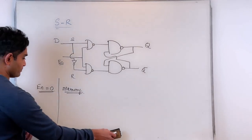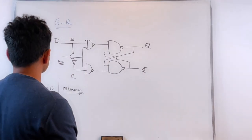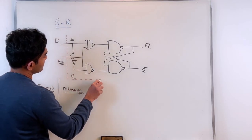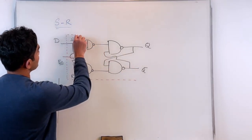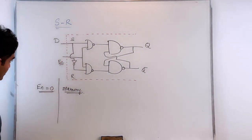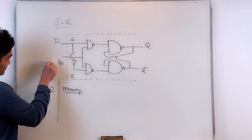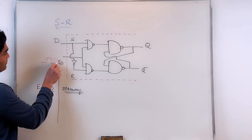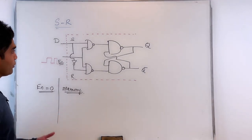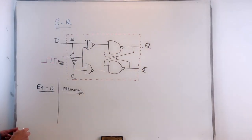The circuit has now transformed into what we call the D flip-flop. A flip-flop is a clocked latch — if I apply a clock signal to the enable input, it becomes a flip-flop. So this is my D flip-flop.